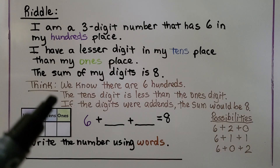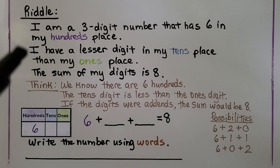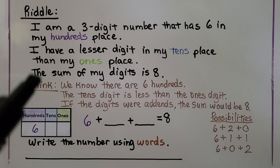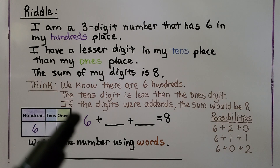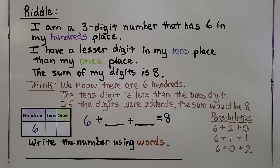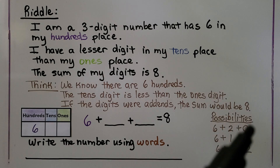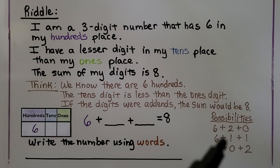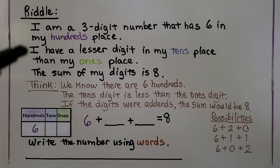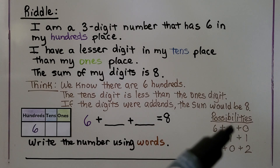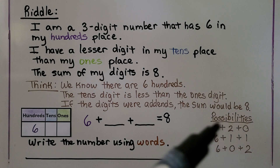The tens digit is less than the ones digit, and the sum of all digits is eight. We think of the possibilities: six plus two plus zero equals eight; six plus one plus one equals eight; or six plus zero plus two equals eight. The first option has more tens than ones, so it can't be right.